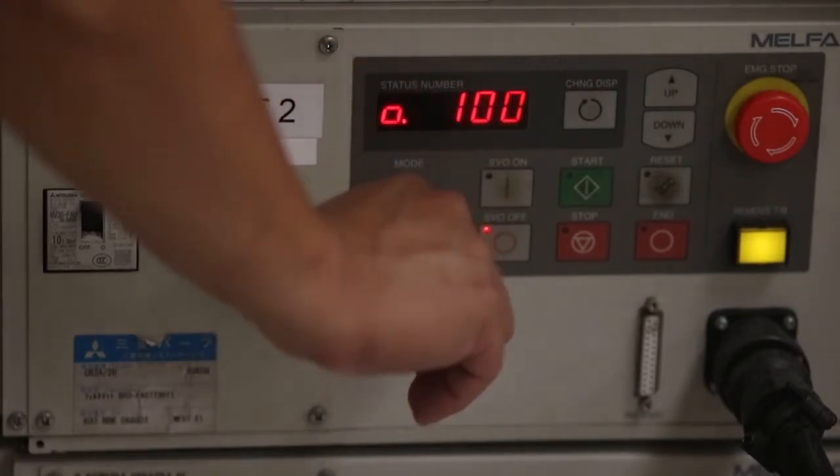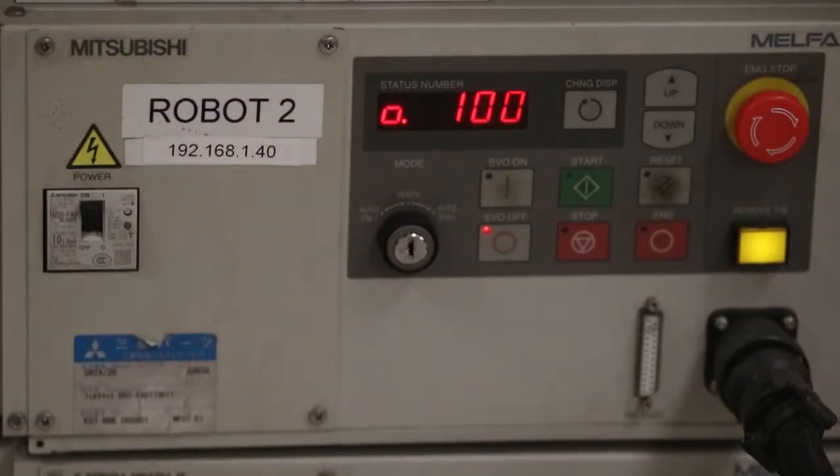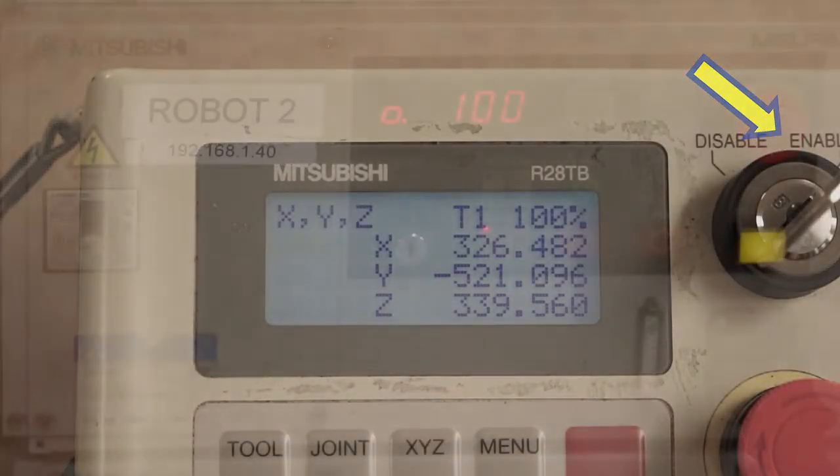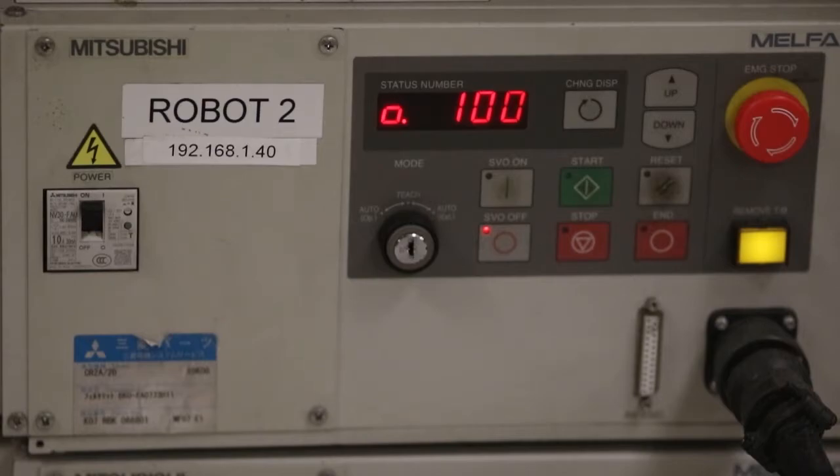You will need to place the controller key switch in the teach position and then remove the key. Place it in the key slot on the teach pendant and turn it to the enable position. At this point, the robot is ready to be used.